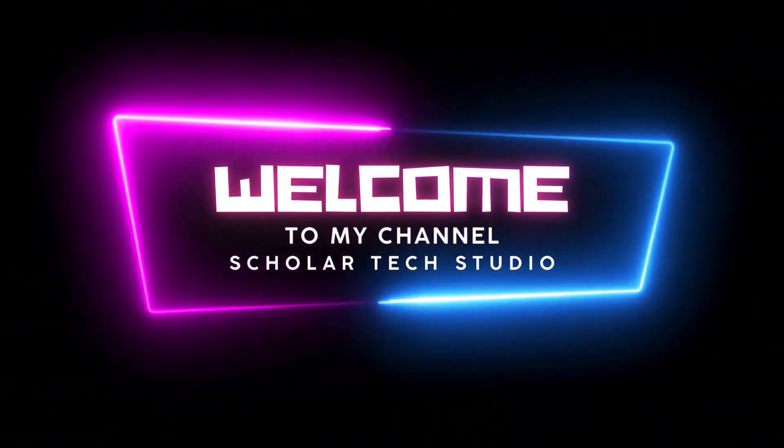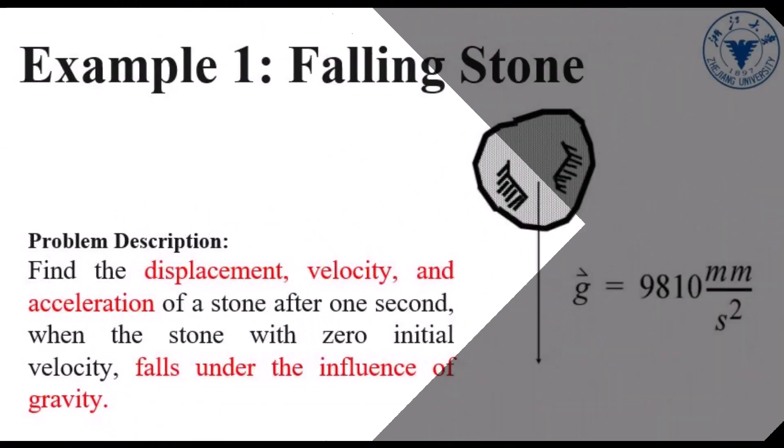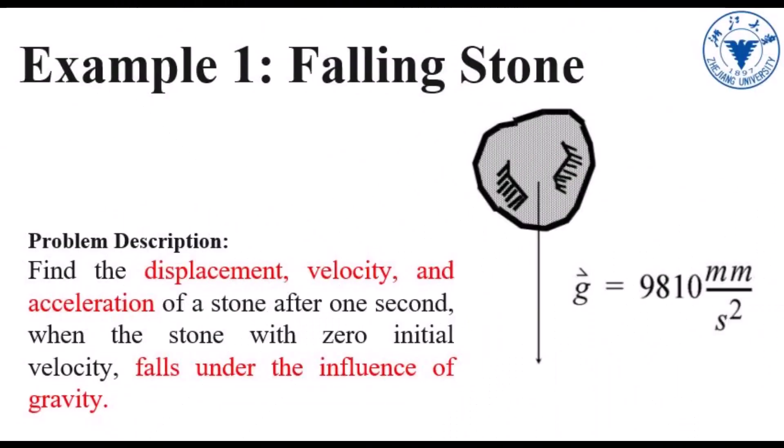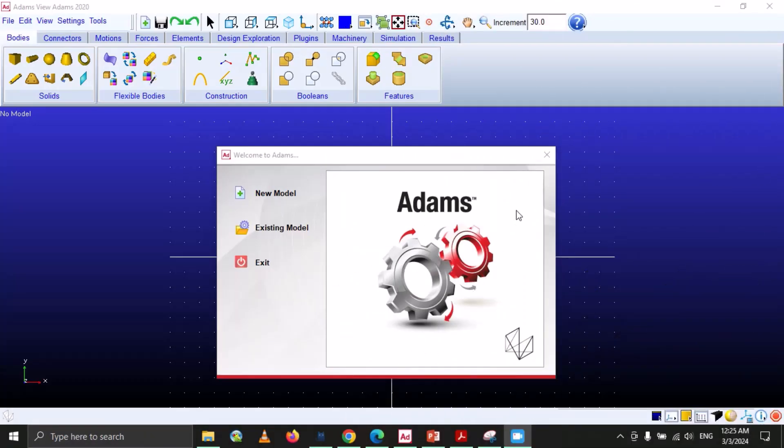Hello guys, welcome to my YouTube channel Scholar Tech Studio. In this video we are going to simulate the phenomena of free falling stone. As you can see on the screen, there is a stone that will free fall under the action of gravity, and the gravity value is written here. We will find the displacement, velocity, and acceleration of the stone after one second.